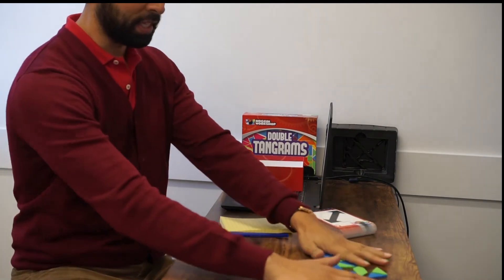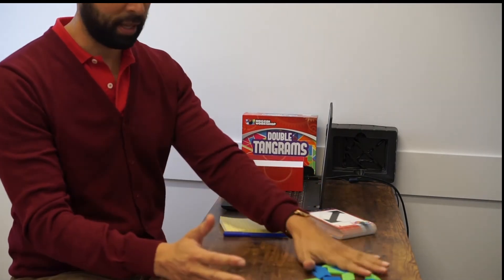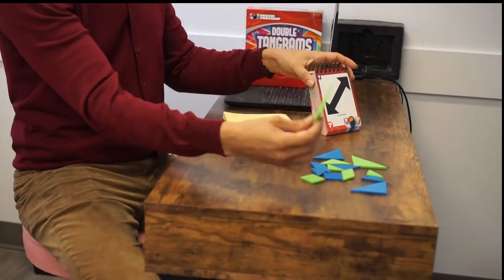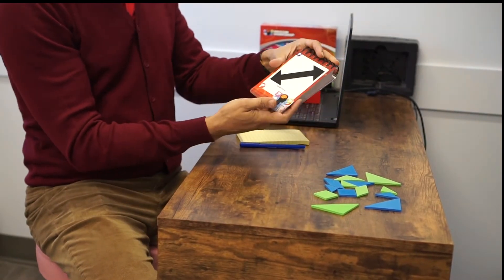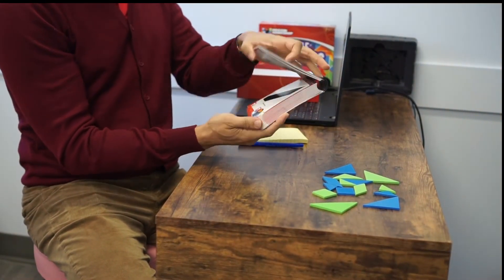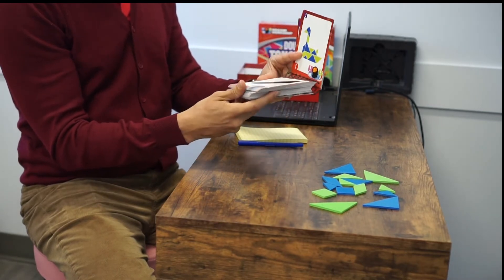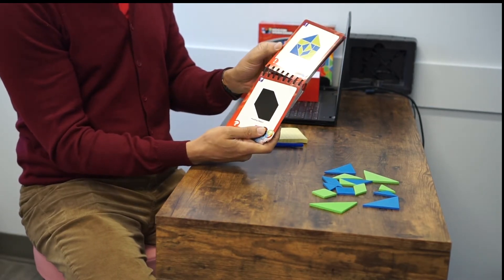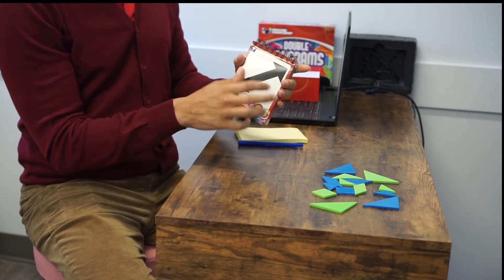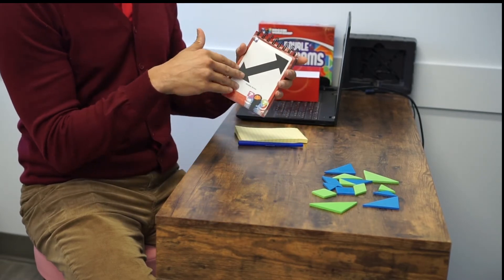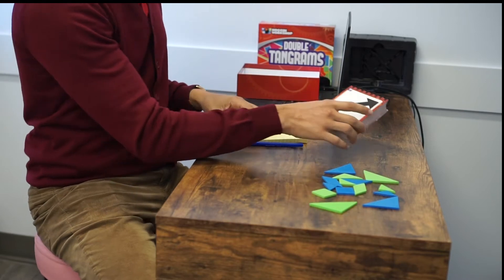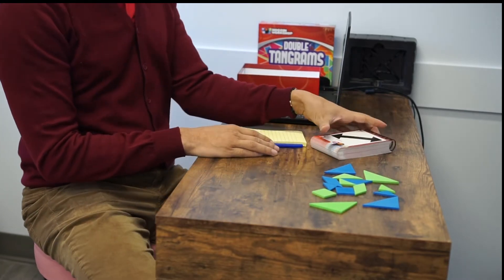Basically it comes with these patterns here and these little shapes, and you have this little design book. You can thumb through them and see all these different designs and the solutions are on the other side of the cards. There could be other ways to solve it other than what the solution card shows you and they're pretty challenging.